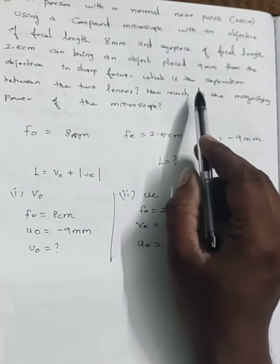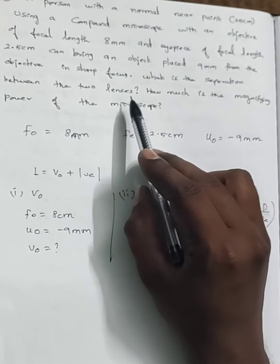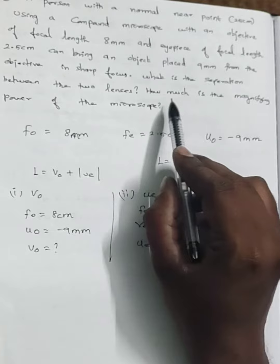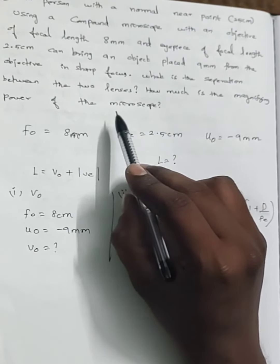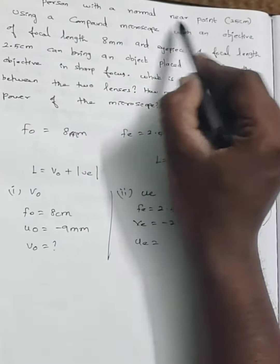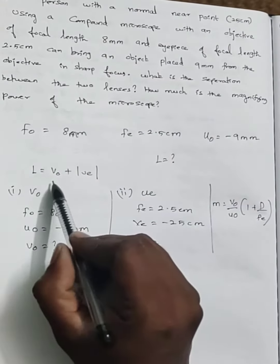They ask us to find the separation between the two lenses, that means we need to find L. And they ask to find how much is the magnifying power at that case, in the sense image forming at near point as the near point information is given.